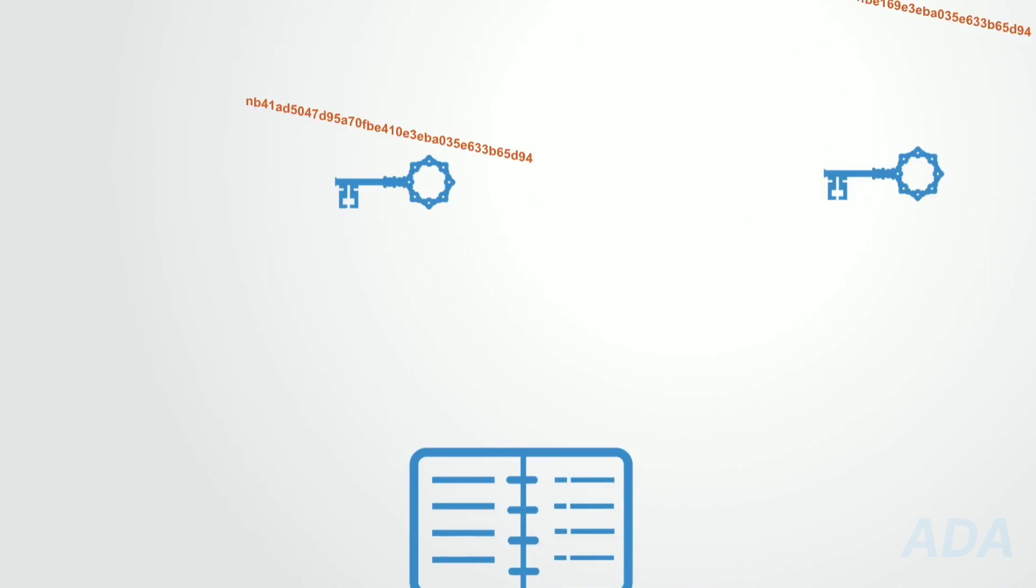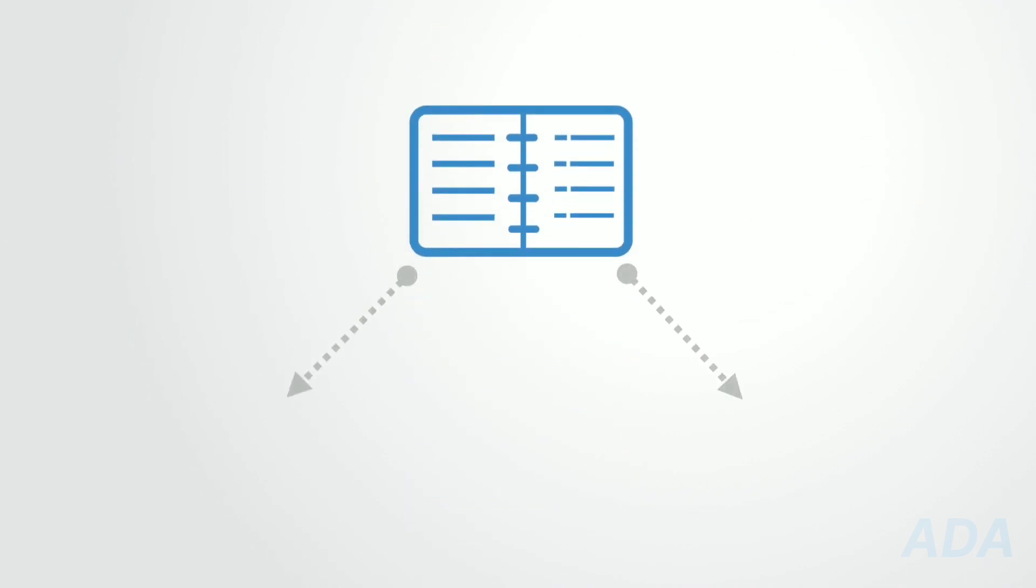There are two main classes of distributed ledger, public ledgers and permission ledgers.